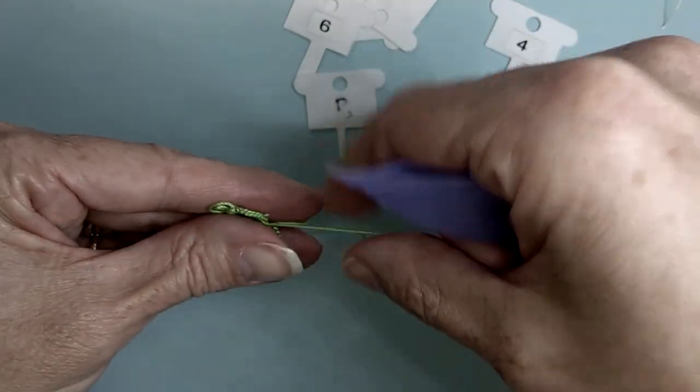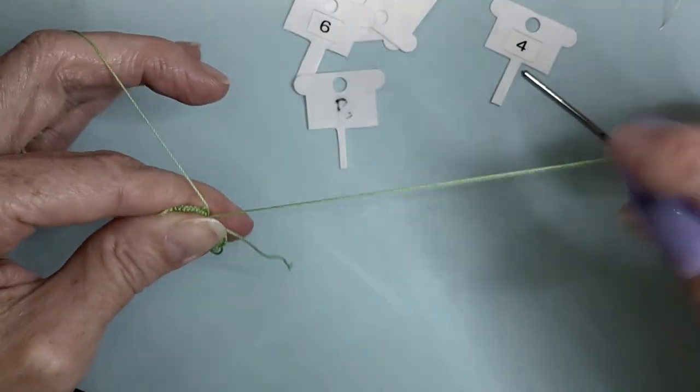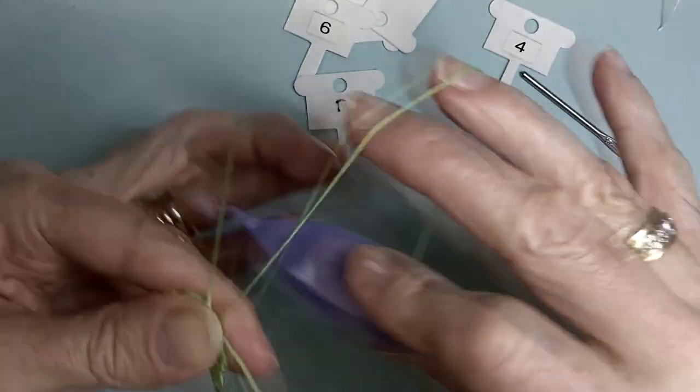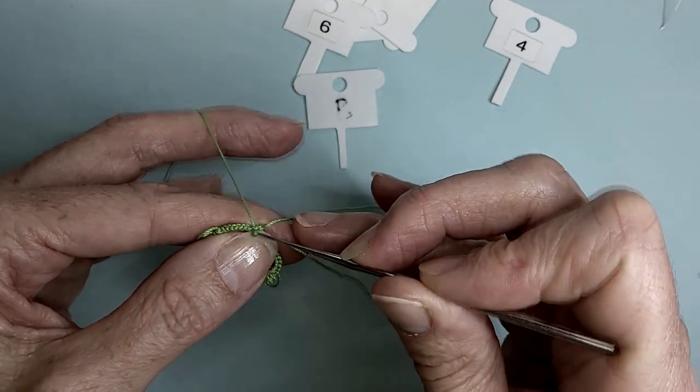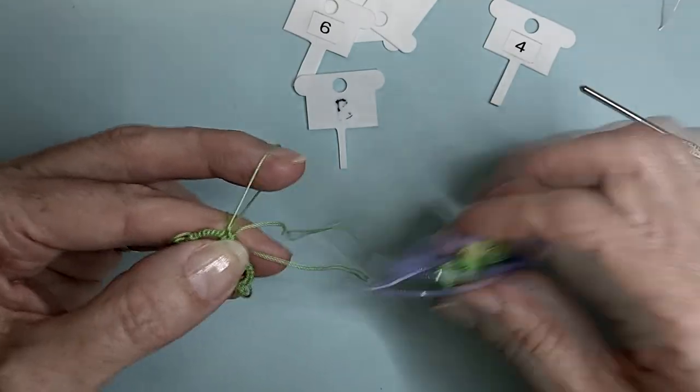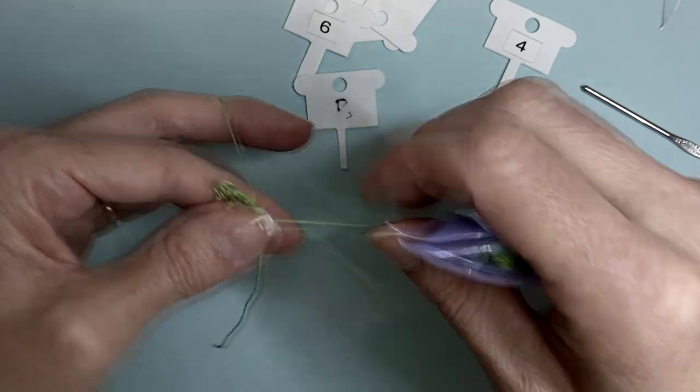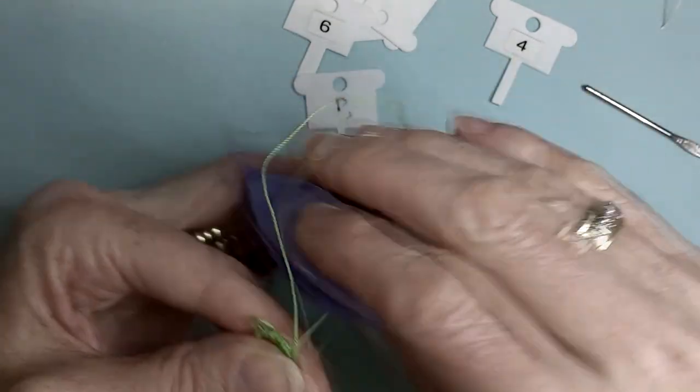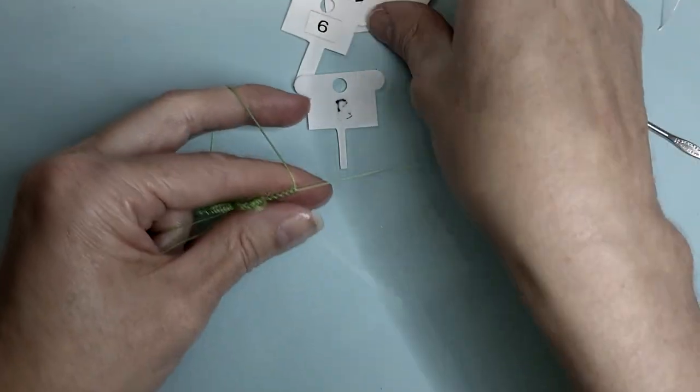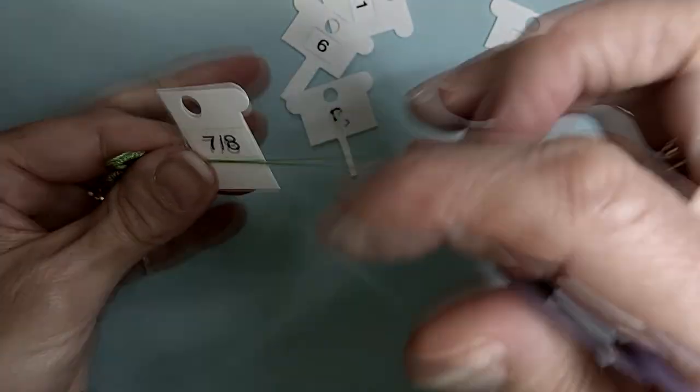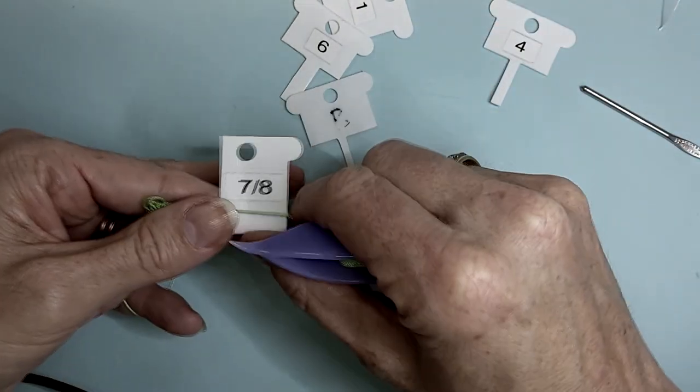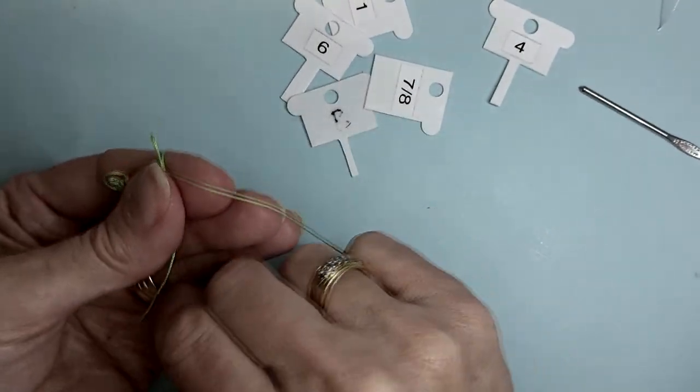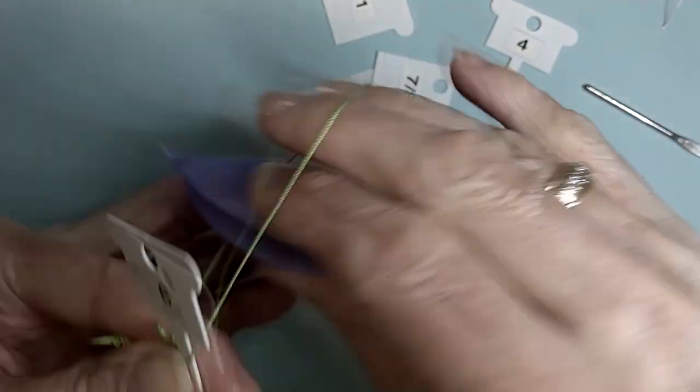Ring C: we are working two, we're joining back to ring B, we have seven, followed by our long picot. We're doing seven eighths of an inch because this is the second bottom wing. Followed by one double stitch, picot, and two.